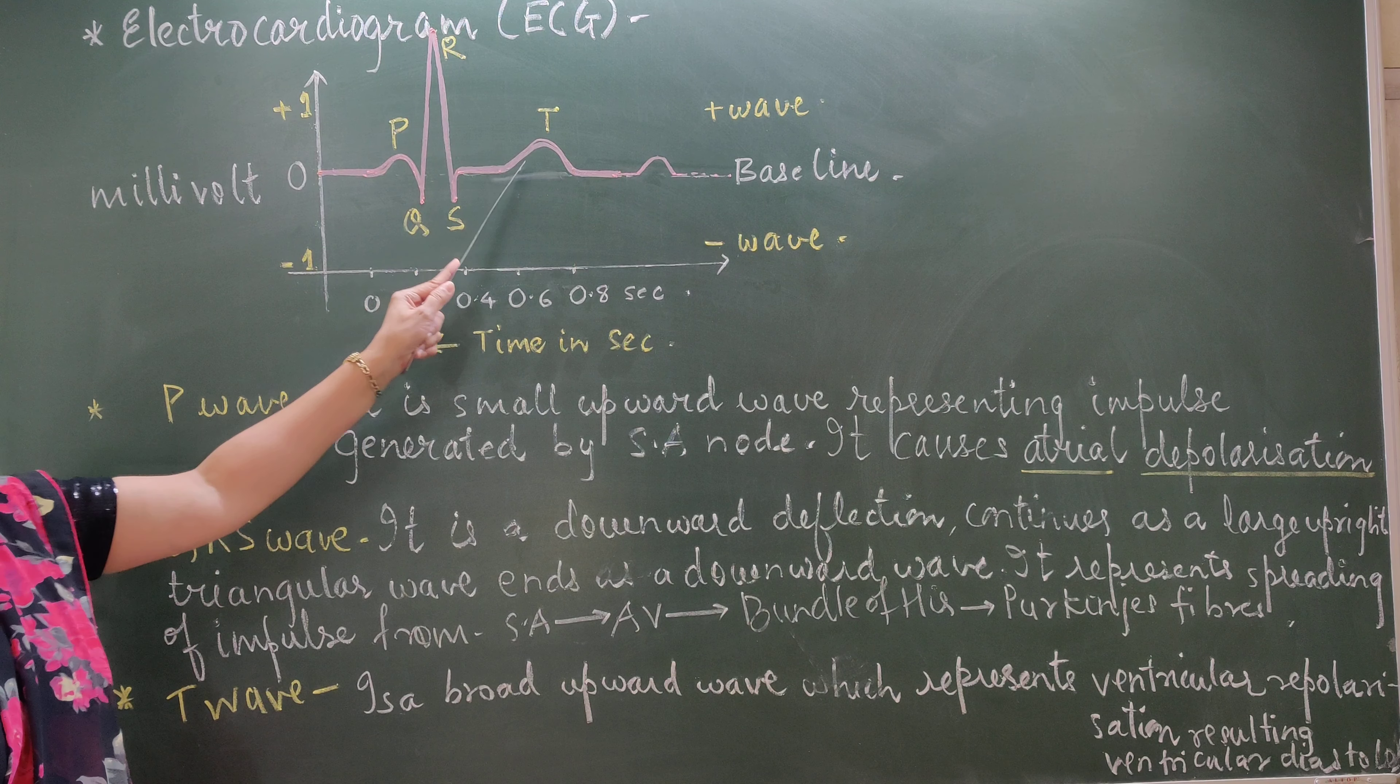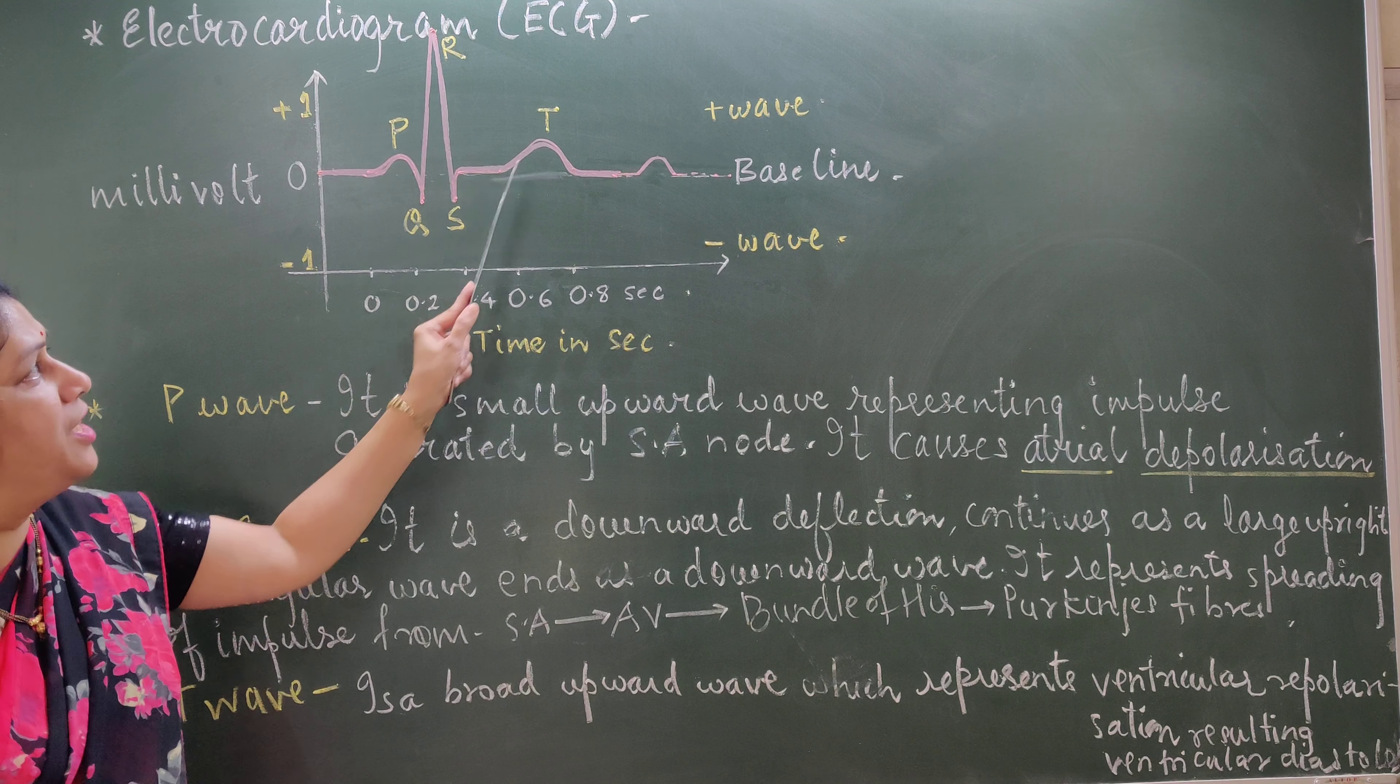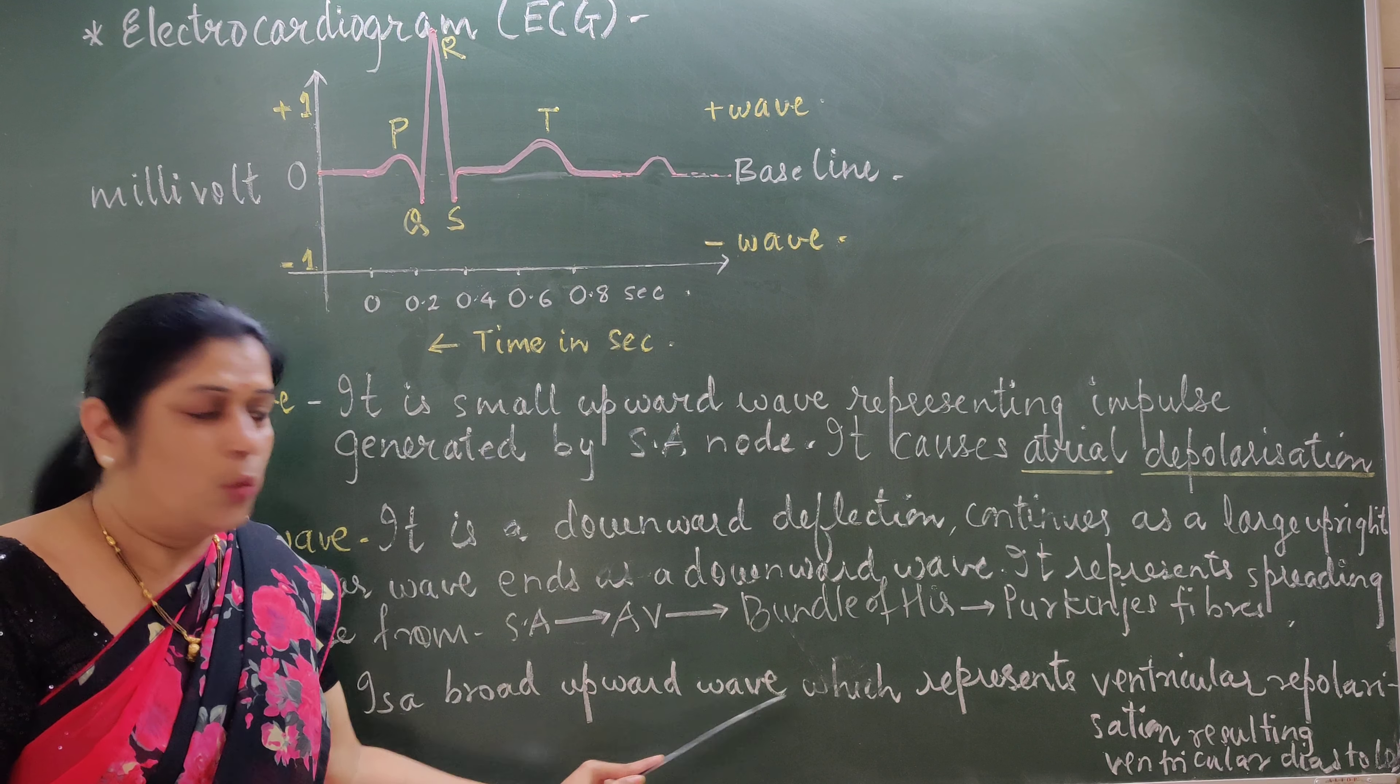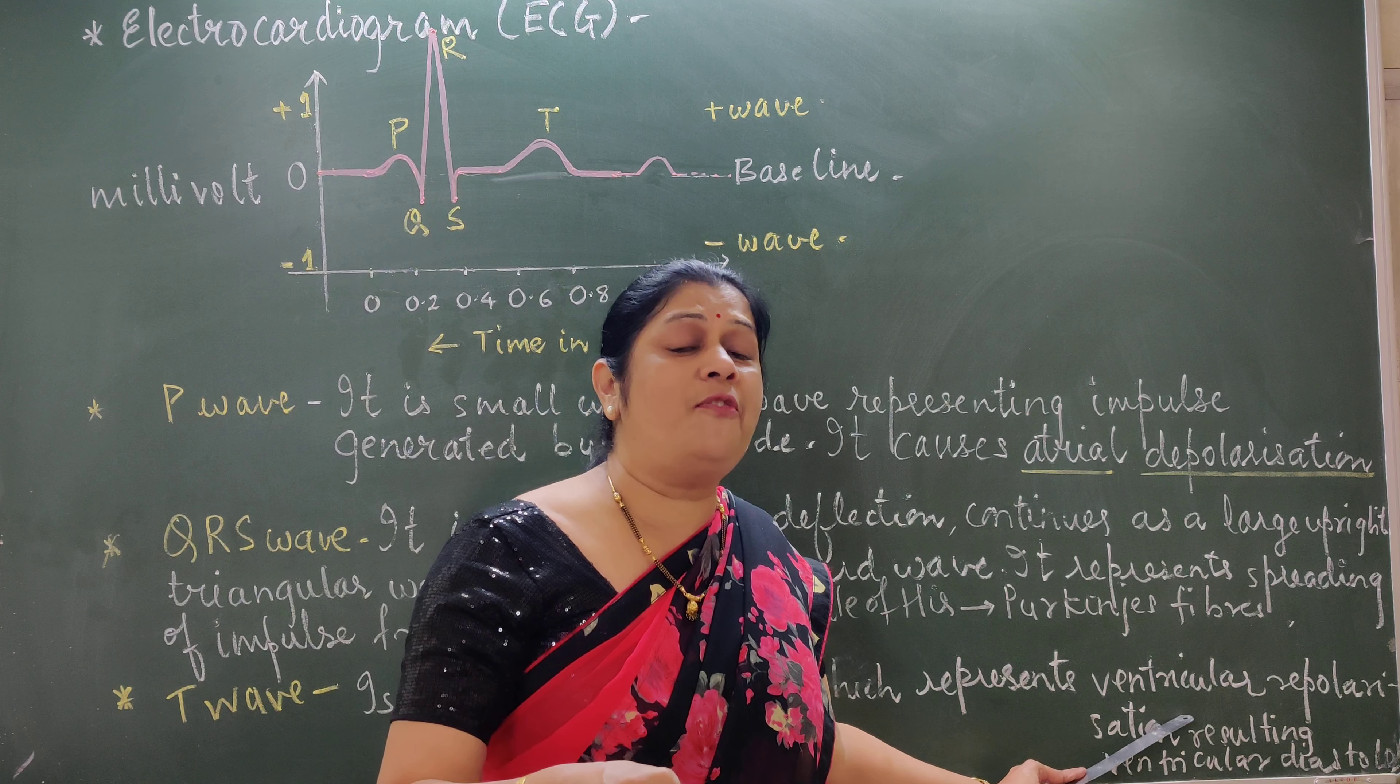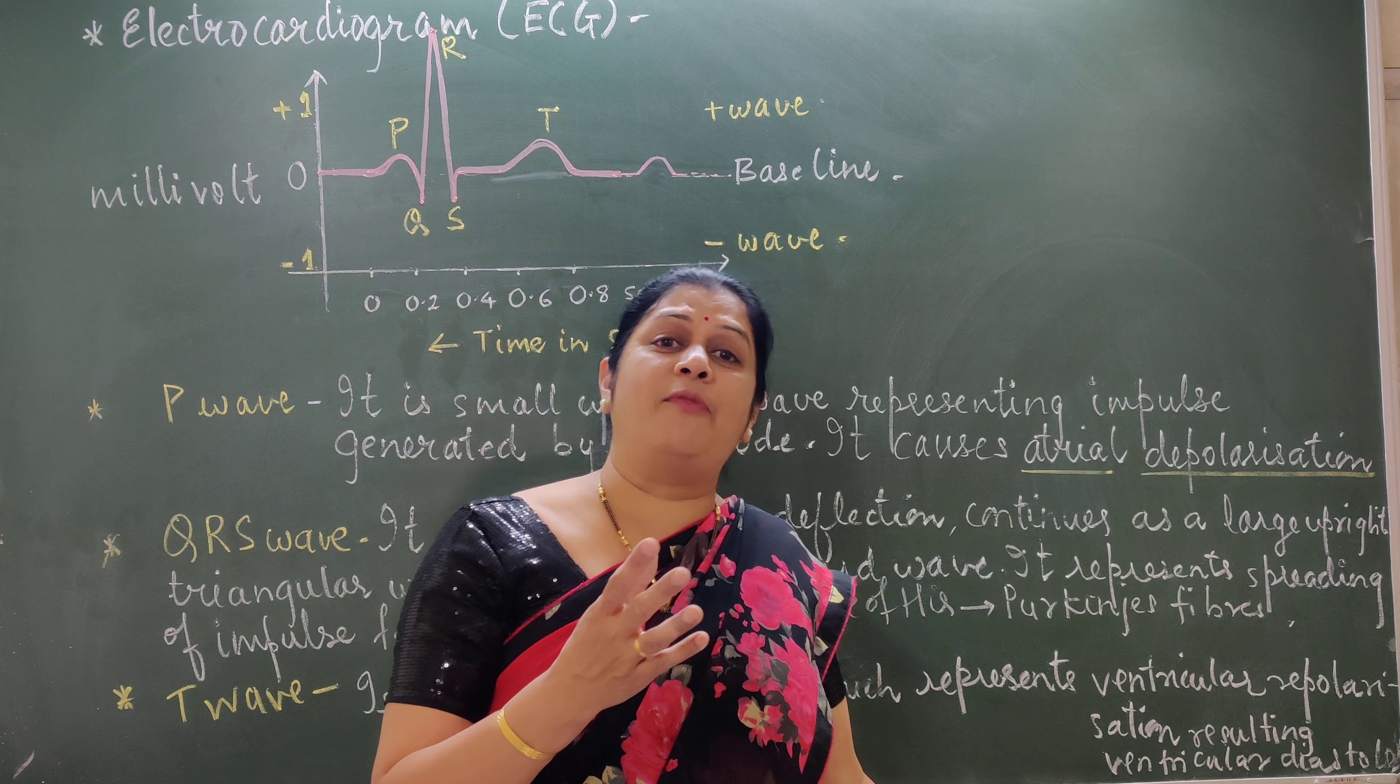Then, the third wave is the T wave. Are these two waves similar, P and T? No. You can see the difference as P is the short or very small deflection. And here you will see the inflated deflection. Where it is a broad upward wave which represents the ventricular repolarization. And here what happens to the ventricle? Ventricle undergoes the process of repolarization means it undergoes relaxation. Relaxation is diastole. How much time does it take? 0.4 seconds.